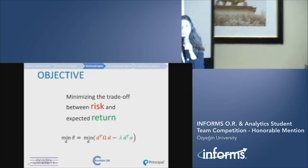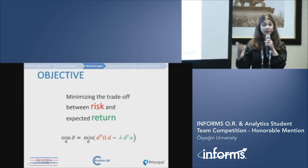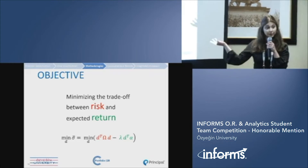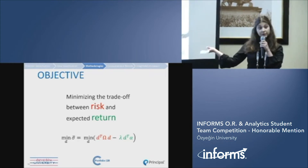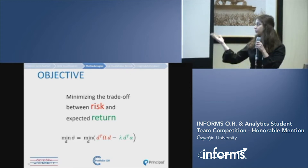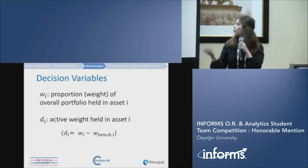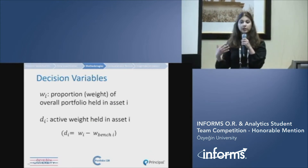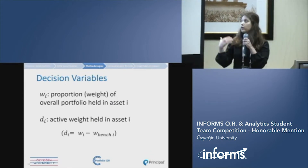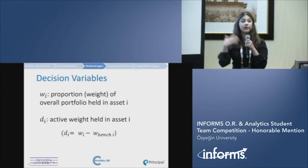Our objective function is minimizing the trade-off between risk and return, as shown in the color-coded slide. We have a lambda value, which is a tuning parameter to decide which part of the objective function is dominant. We have two decision variables: the proportion of the overall portfolio for each asset i, and a di value which is the active weight, calculated as the difference between the benchmark weight and the weight assigned for each rebalance period.